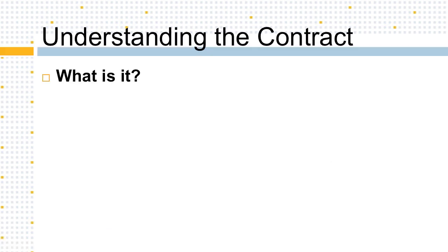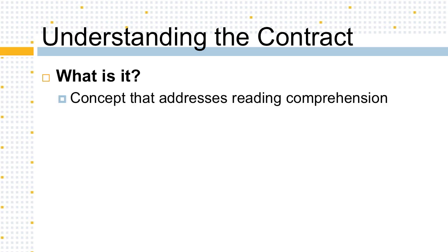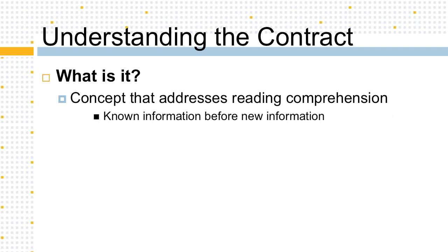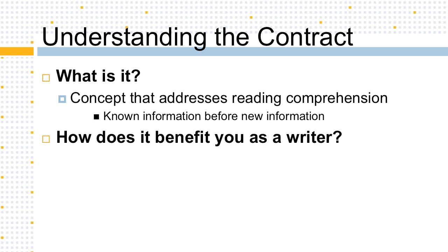The Known New Contract is a linguistic concept that demonstrates how readers process information. In short, because we know that readers best understand new information when it's built off of known information, writers can use the Known New Contract to create cohesion and clarity in writing.